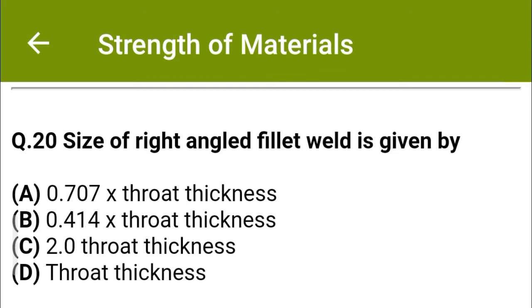Next question: The size of a right-angled fillet weld is given by — option A: 0.707 × throat thickness, option B: 0.414 × throat thickness, option C: 2.0 × throat thickness, option D: throat thickness. The correct answer is option B: 0.414 × throat thickness.